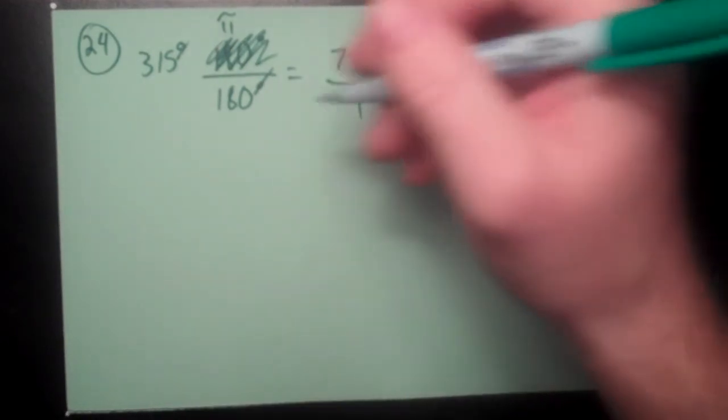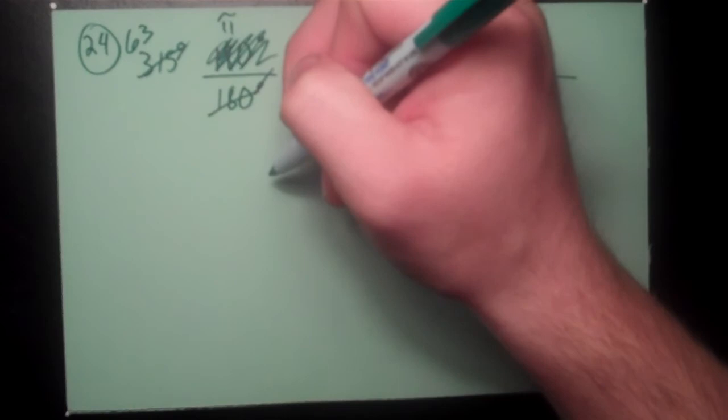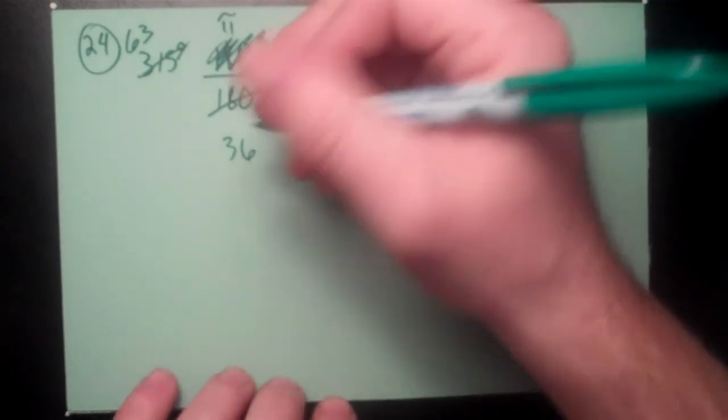And here we could say that clearly 5 goes into 180 and 315. So 315 divided by 5 is 63. And 180 divided by 5 is 36. And then 3 goes into both of these. So 36 divided by 3 is 12. And 63 divided by 3. We're just simplifying a fraction here. 21. And then 3 goes into both of these. Just simplifying that fraction. 7π over 4. It's converted from degrees to radians.